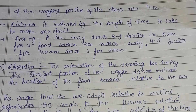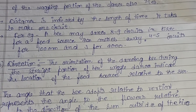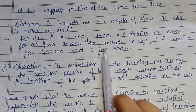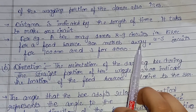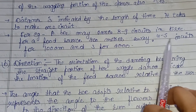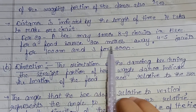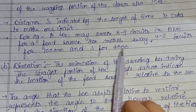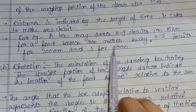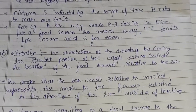Distance is indicated by the length of time it takes to complete one circuit. For example, a bee may dance 8 to 9 circuits in 15 seconds for a food source 200 meters away, 4 to 5 circuits for 1,000 meters, and 3 circuits for 2,000 meters. So the number of circuits decreases as distance increases.